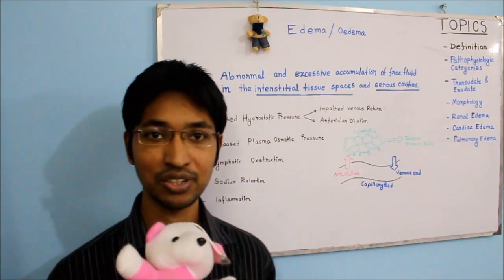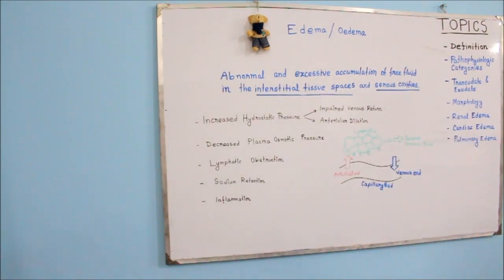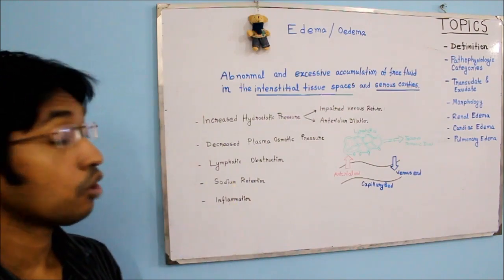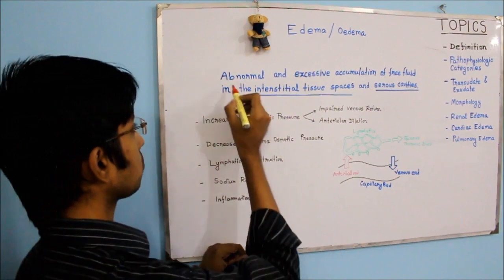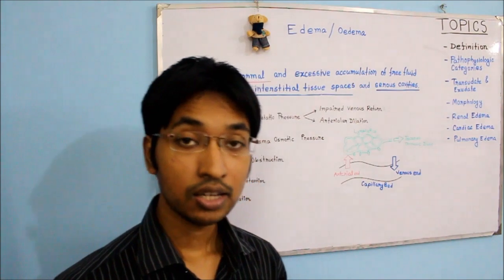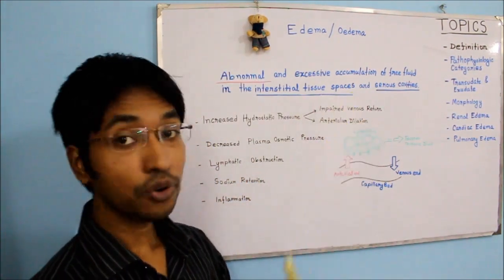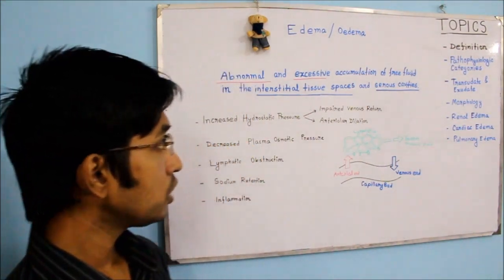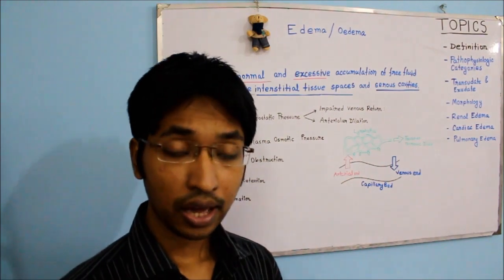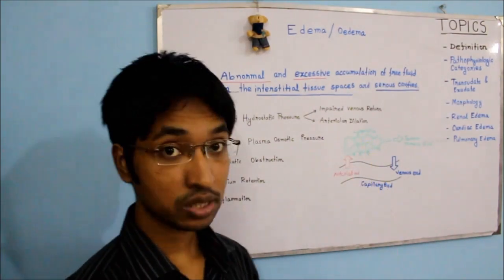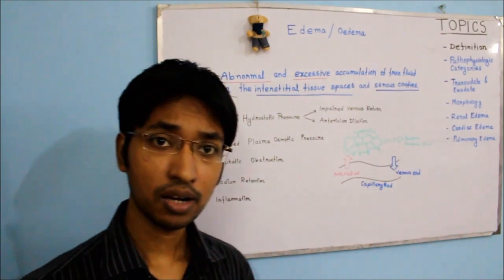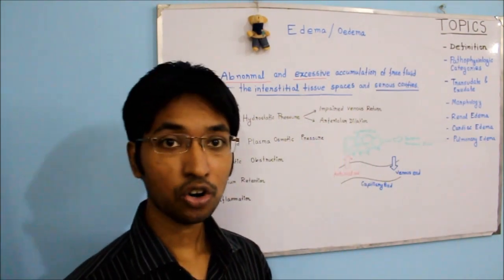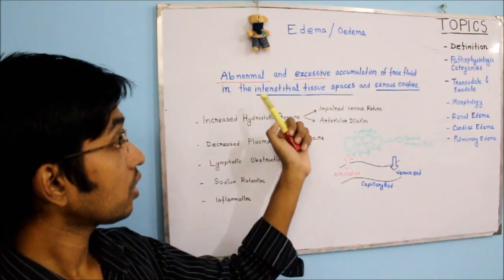I will explain this definition line by line. Edema can be defined as abnormal and excessive accumulation of free fluid. Notice the term abnormal — this is an abnormal condition, and there is accumulation of free fluid. Also notice the term excessive accumulation. Free fluid is present in interstitial tissue space and also a small amount is present in the serous cavity, but that is not edema. Edema results when the amount of free fluid increases in an excessive manner.